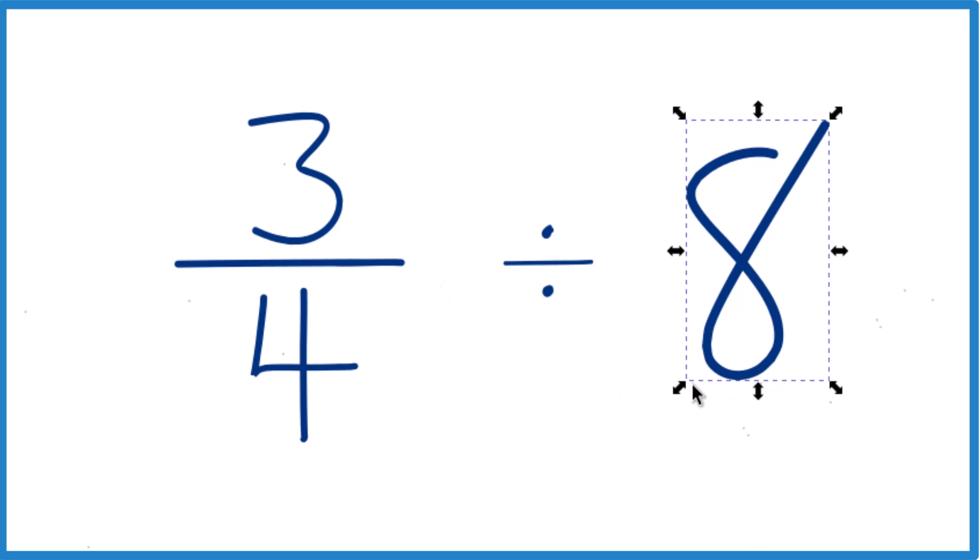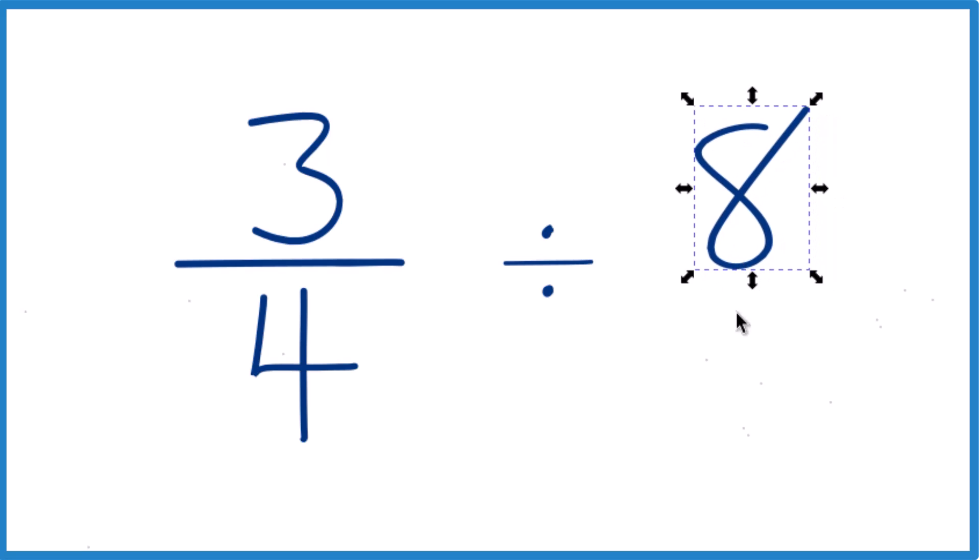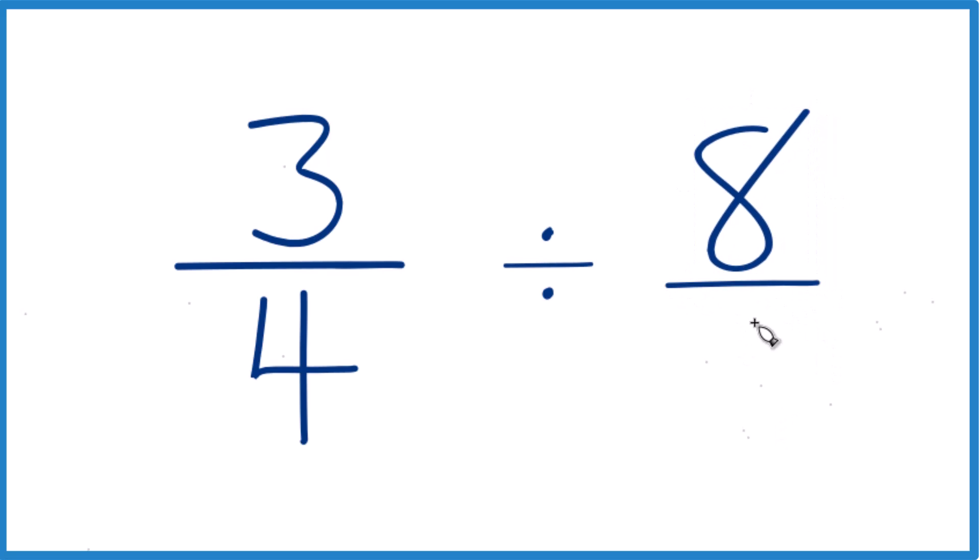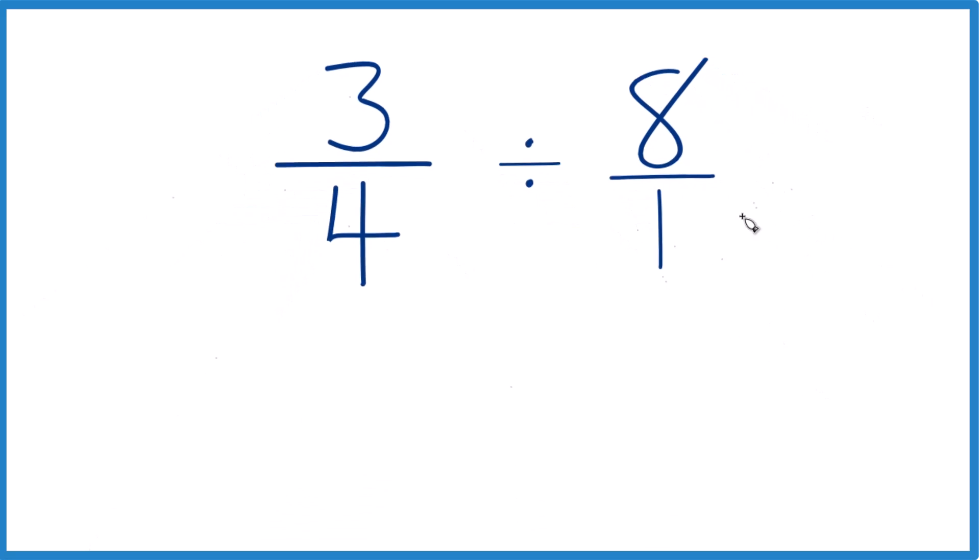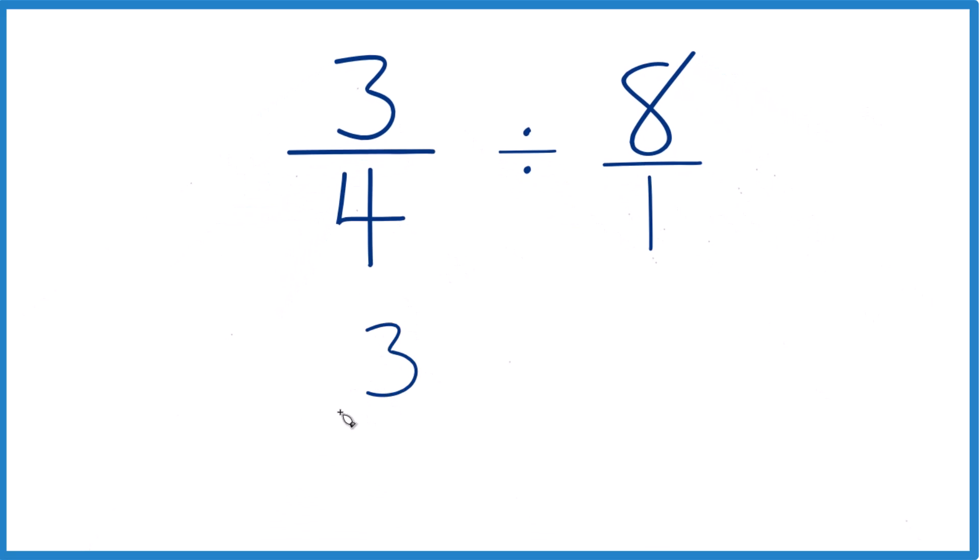Let's take the eight here, and instead of eight, let's call it eight over one, because eight divided by one is still eight, but everything lines up now. We take our three-fourths here, and instead of division, we're going to multiply by the reciprocal of eight over one. Numerator goes to the bottom, denominator goes to the top, so we have one over eight, or one-eighth.